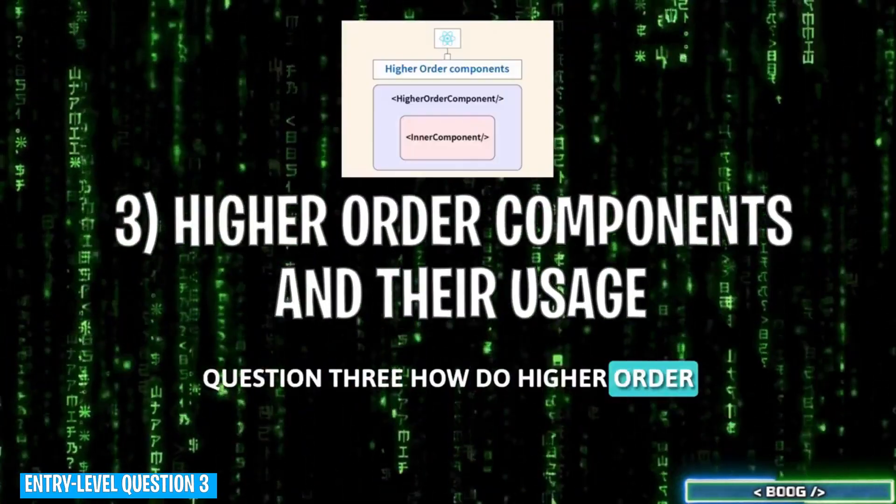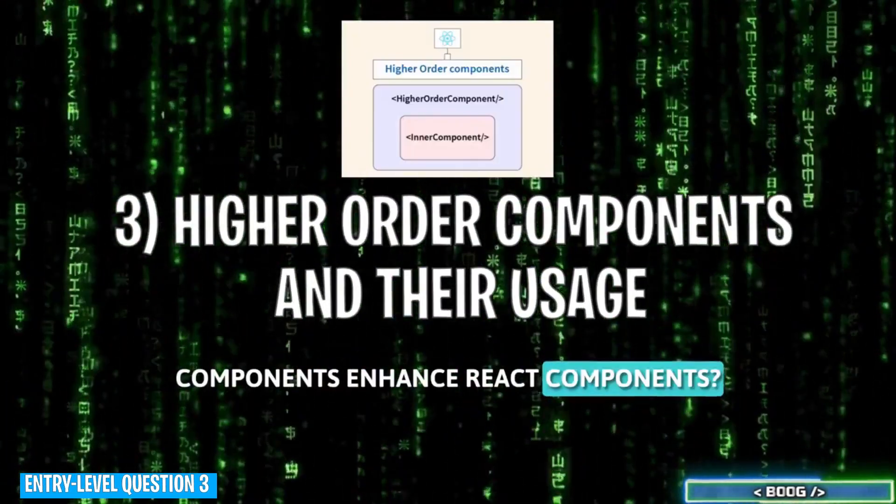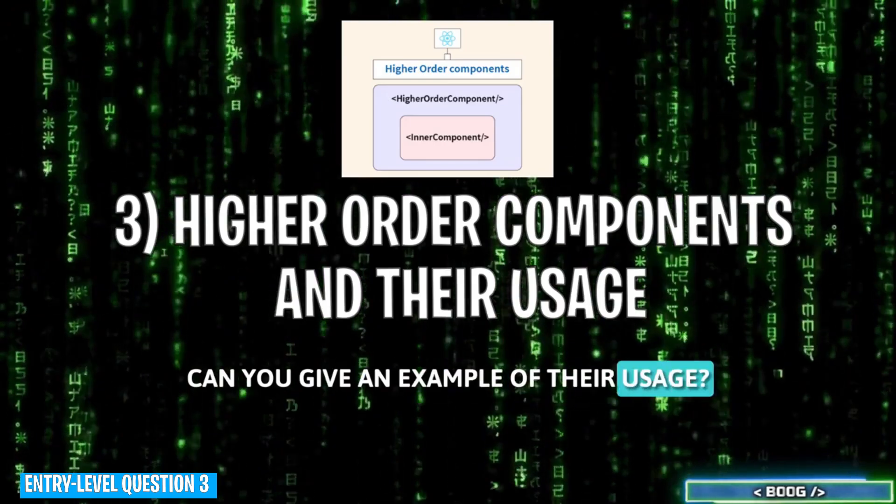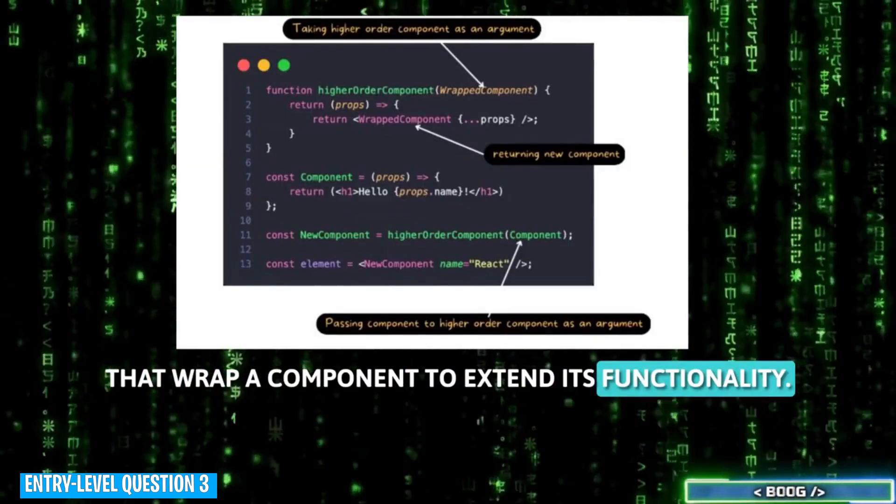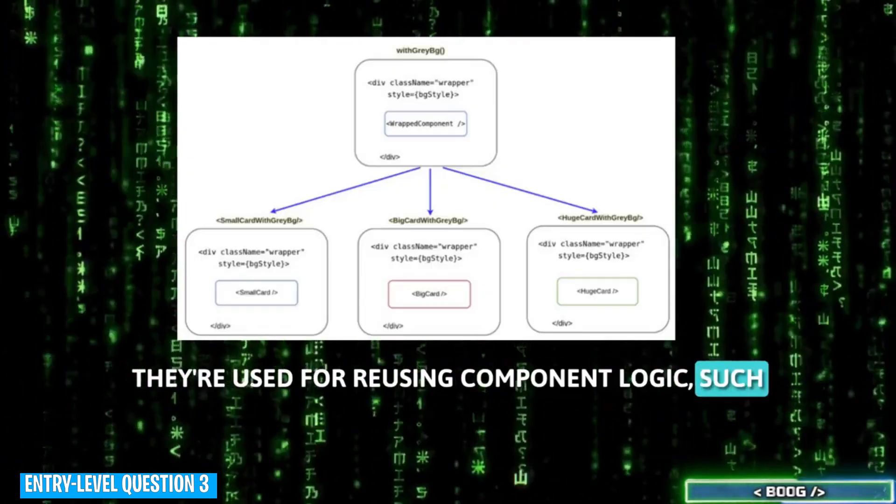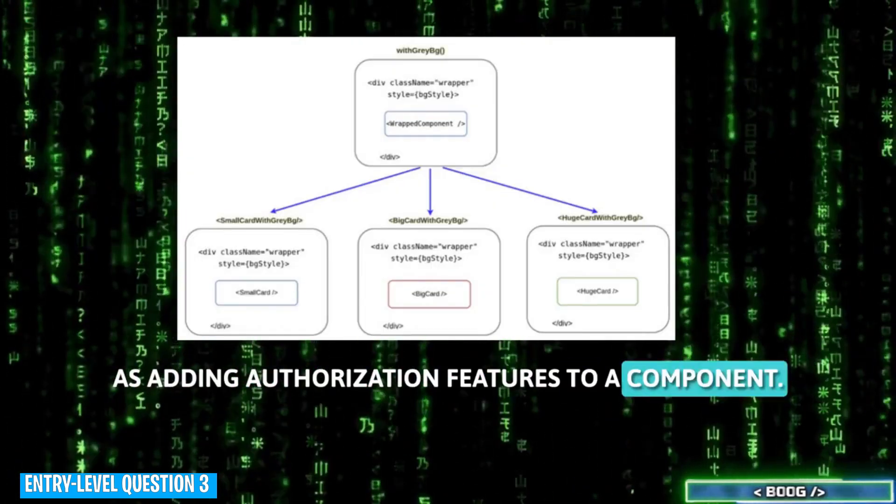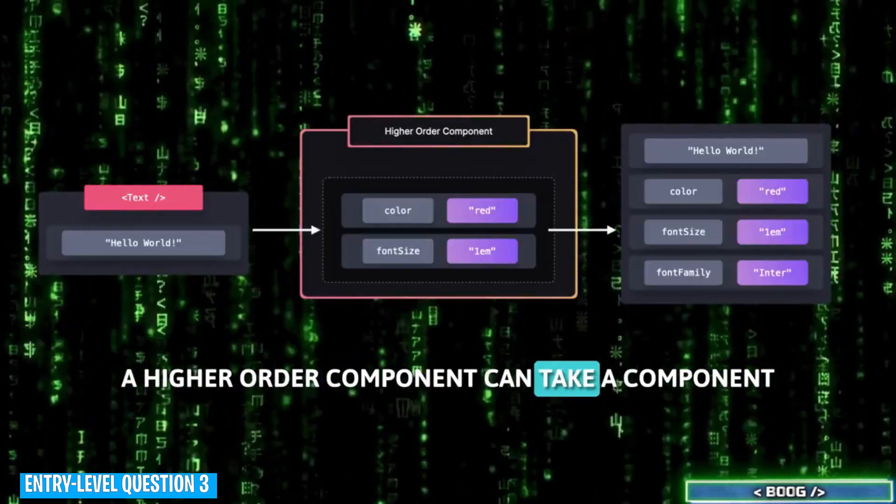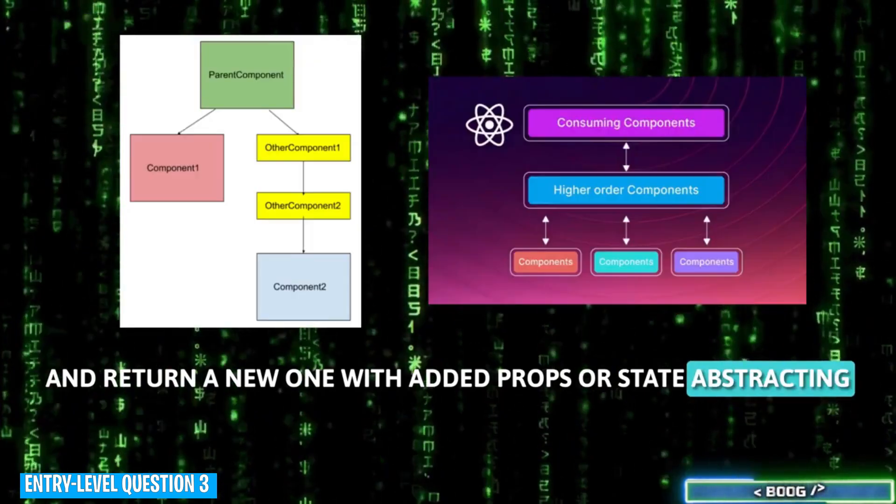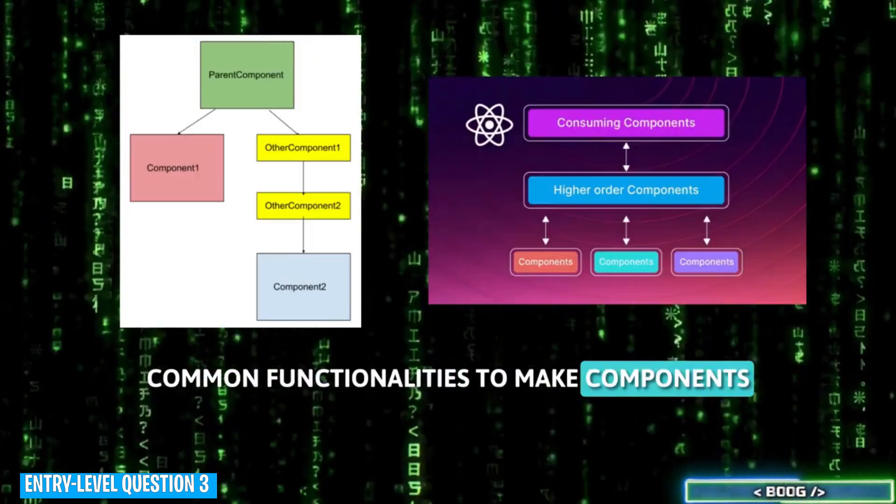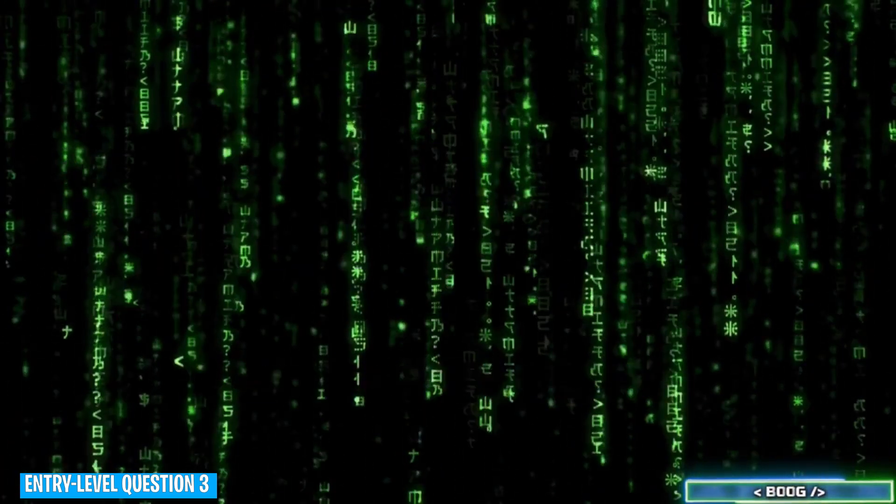Question 3. How do higher order components enhance React components? Can you give an example of their usage? Higher order components are functions that wrap a component to extend its functionality. They're used for reusing component logic, such as adding authorization features to a component. A higher order component can take a component and return a new one with added props or state, abstracting common functionalities to make components more modular and maintainable.